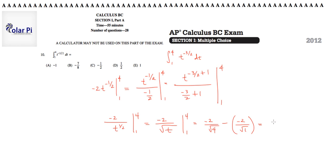Okay, so this is going to say negative 2 over root 4 is 2. And then minus a negative 2 over root 1 is 1. So this is negative 1 plus 2, or positive 1, which is answer choice E.